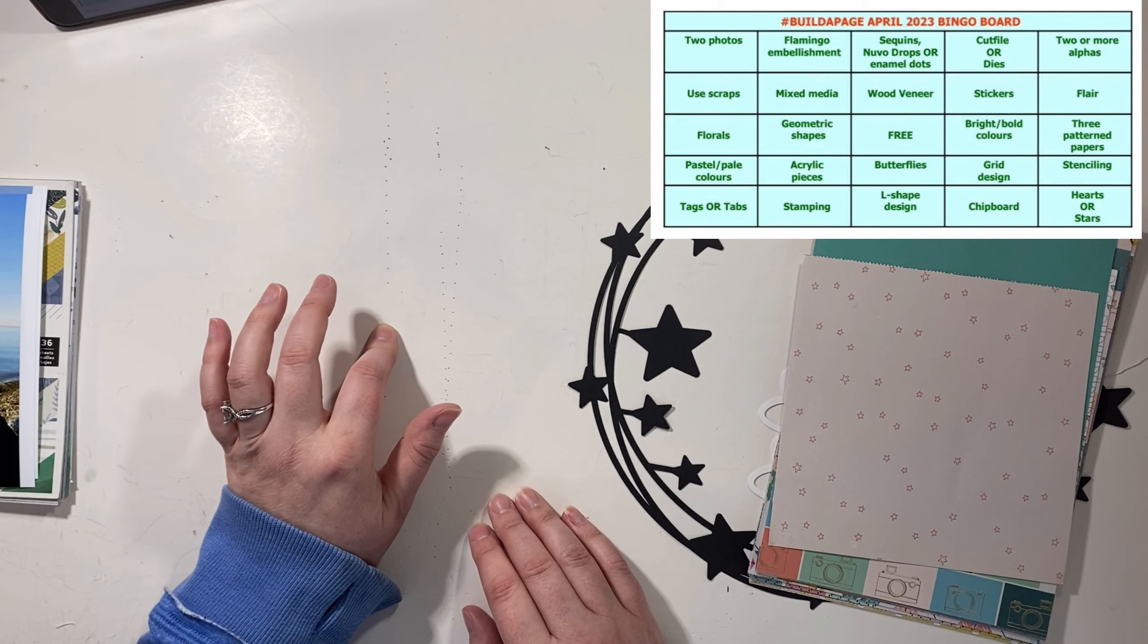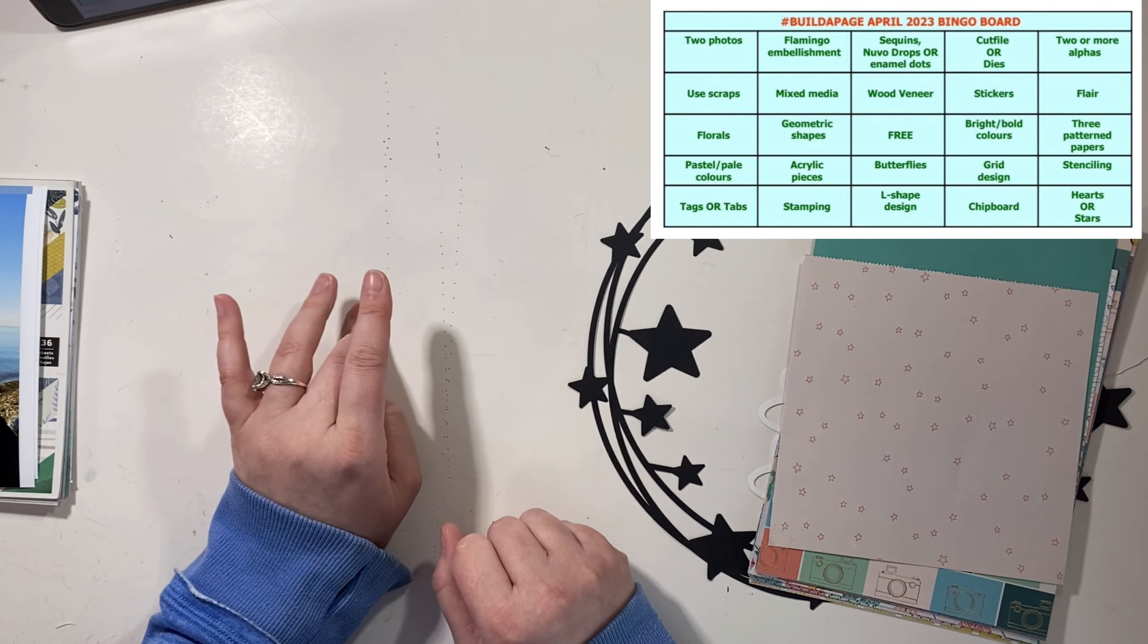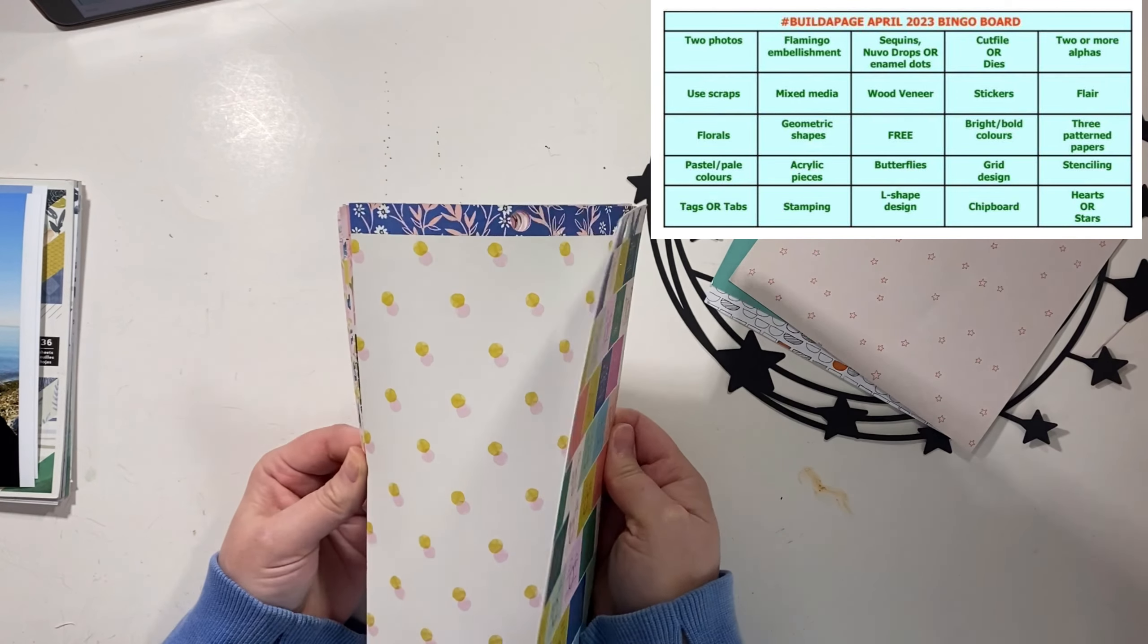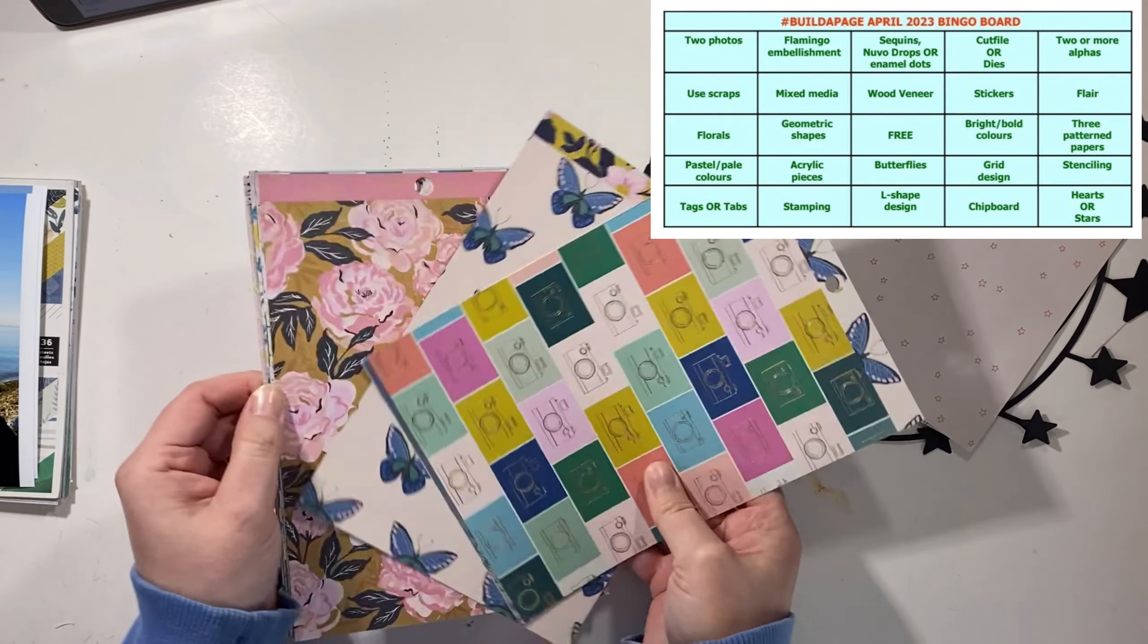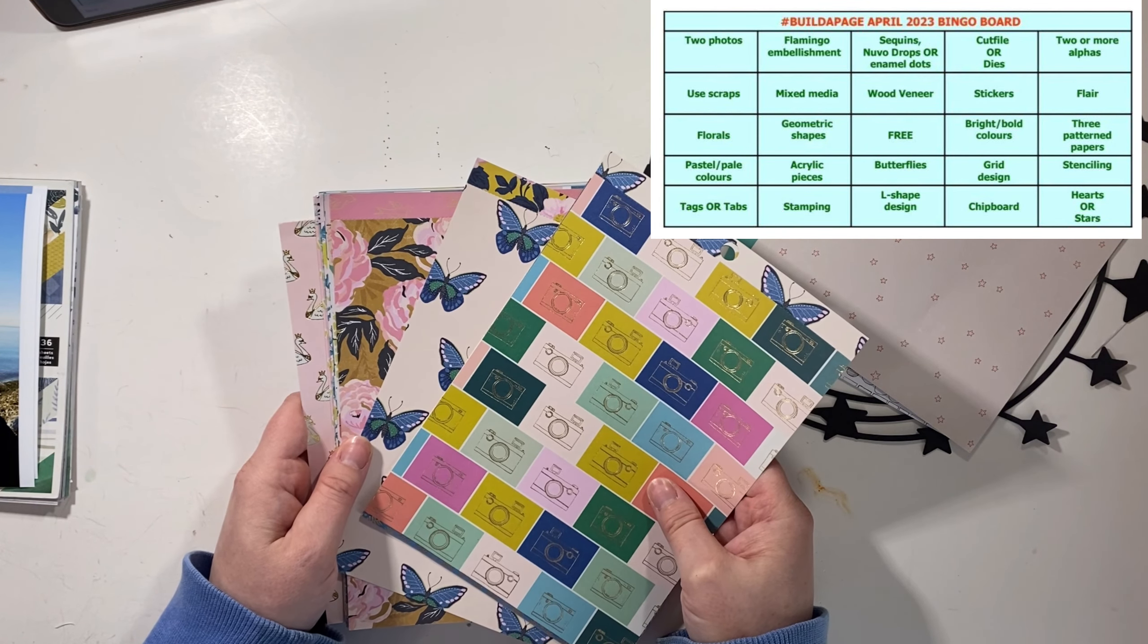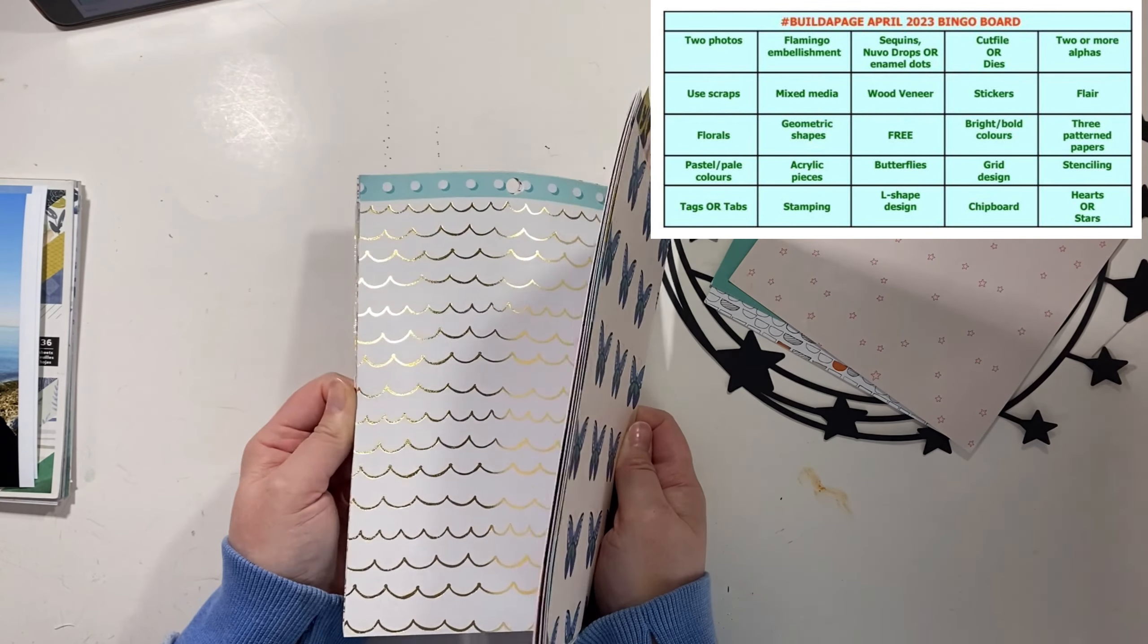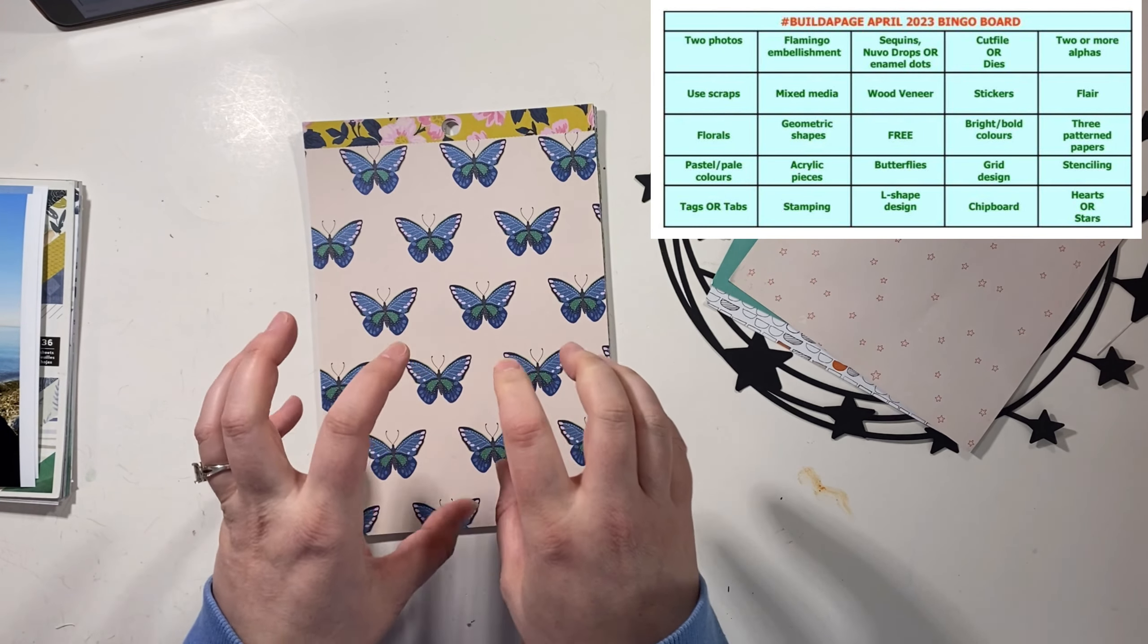Next up we have sequins, wood veneer, enamel dots, a free spot, butterflies, and L shape. I have to remember what my plan was for this. Butterflies—that is why I grabbed this one. Now I remember. I have the Maggie Holmes Carousel collection. I love this collection so much. It has butterflies in it, so I've gotten that taken care of. I can create an L shape with the patterns that are left in here.